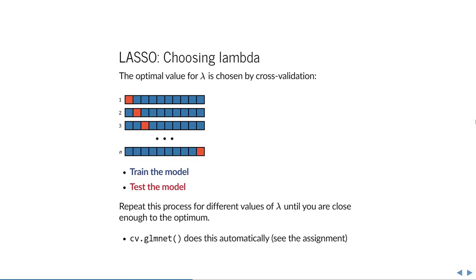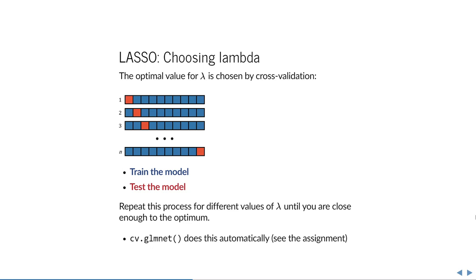The answer is cross-validation. Cross-validation works by training the model on one part of your observations, testing it on the remaining part, repeating this process by leaving out different parts, and then averaging or summing the results to see which value of lambda gives the lowest cross-validated error. Using the function cv.glmnet performs cross-validation automatically to select lambda, as you'll see in the assignment.